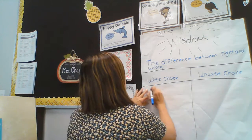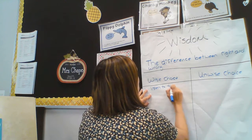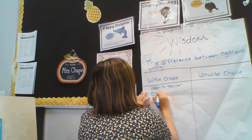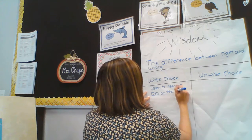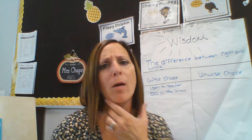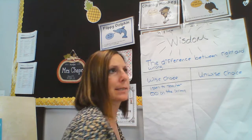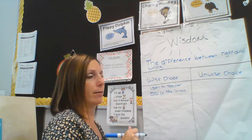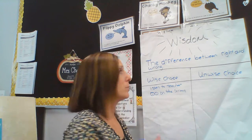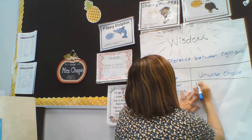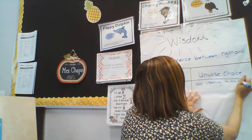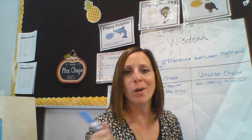So I'm going to quickly write that. Wise choice: listen to teacher. And eyes on screen. Now, since we have two for that, how could it be an unwise choice? Sometimes I see kids moving all around. They're not having their eyes on the screen, and they're not really listening to me if they're playing with their chair. So: not listening to the teacher, and moving around, not looking at the screen.